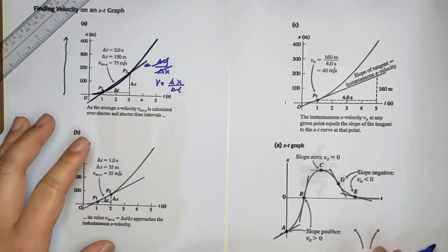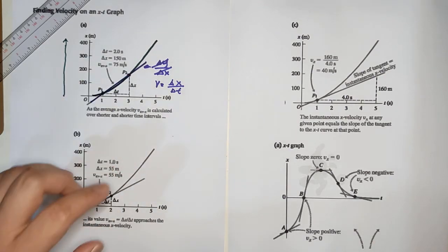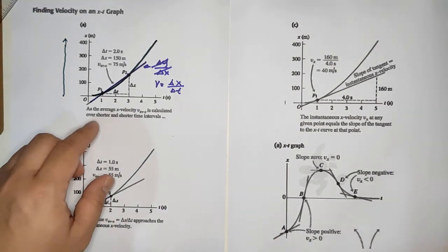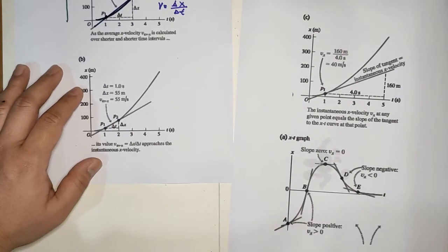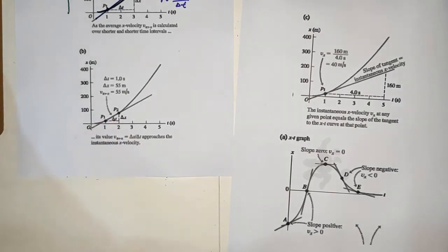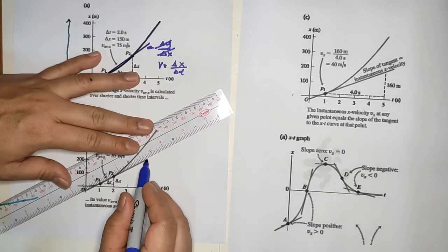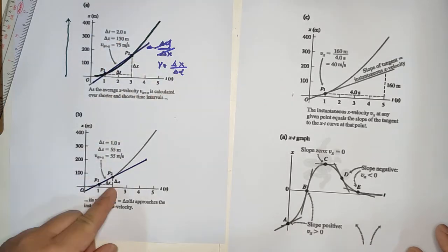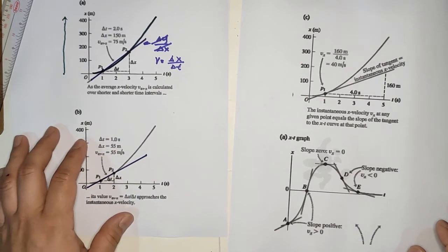The average velocity is the slope of the line between two points. That's between one second to three seconds. Now if we go from one to two seconds, the slope is different — it's steeper compared to the previous one.